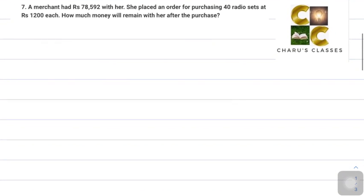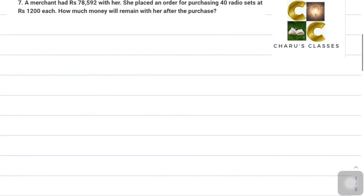Question number 7: A merchant has Rs 78,592 with her. She placed an order for purchasing 40 radio sets at Rs 1,200 each. How much money will remain with her after the purchase?